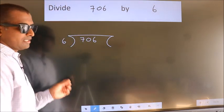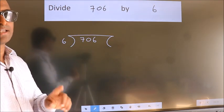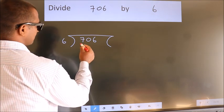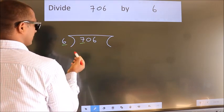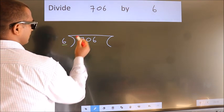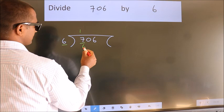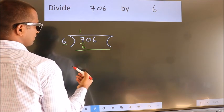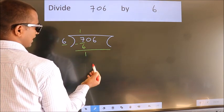This is your step 1. Next. Here we have 7, here 6. A number close to 7 in 6 table is 6 once 6. Now we should subtract, we get 1.